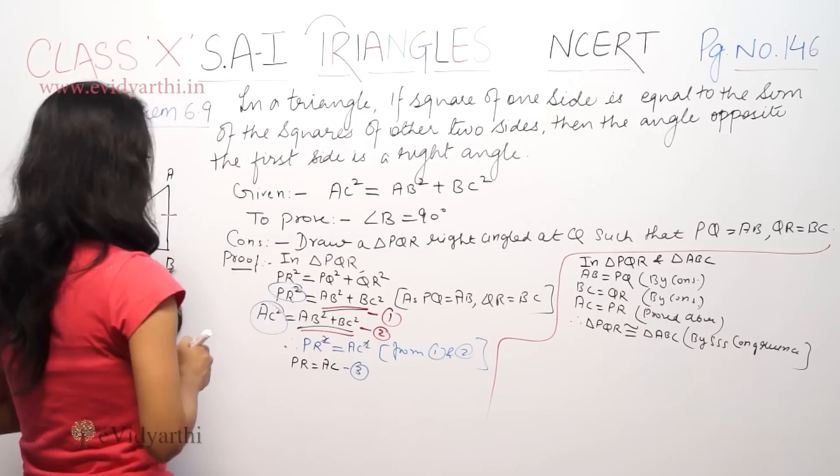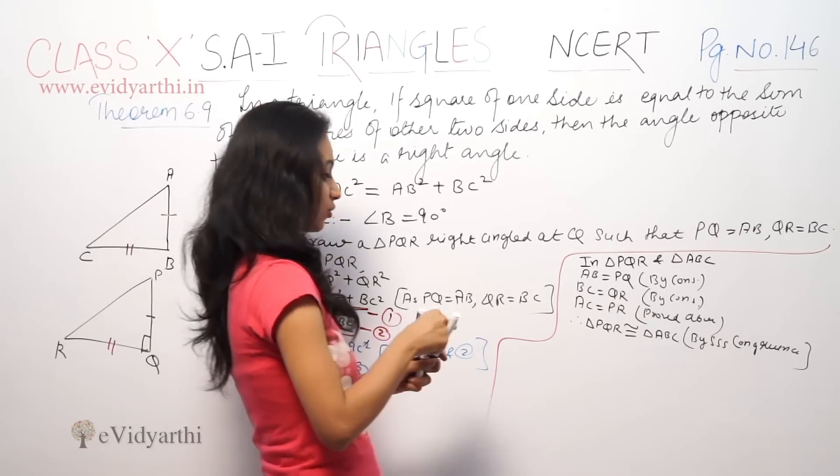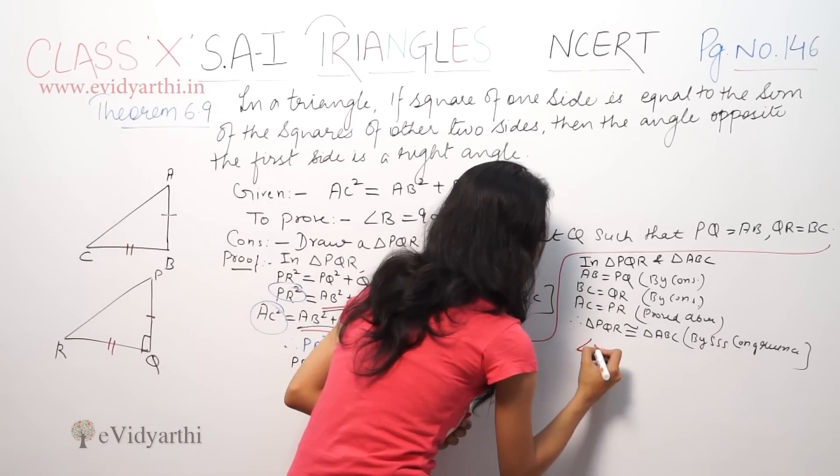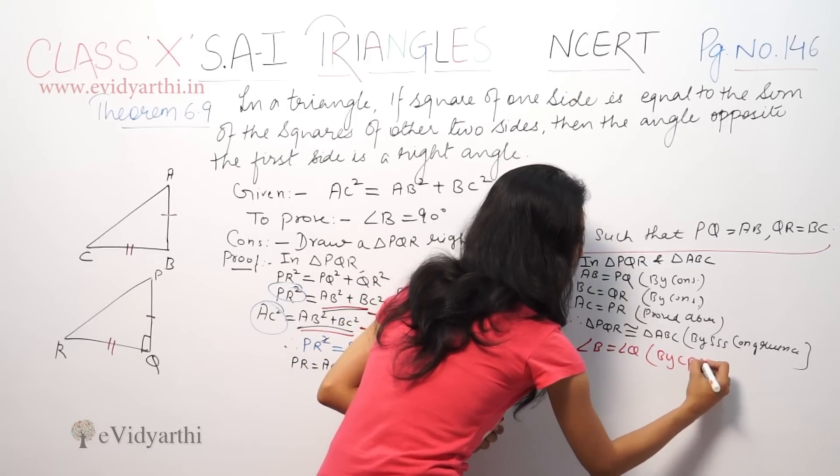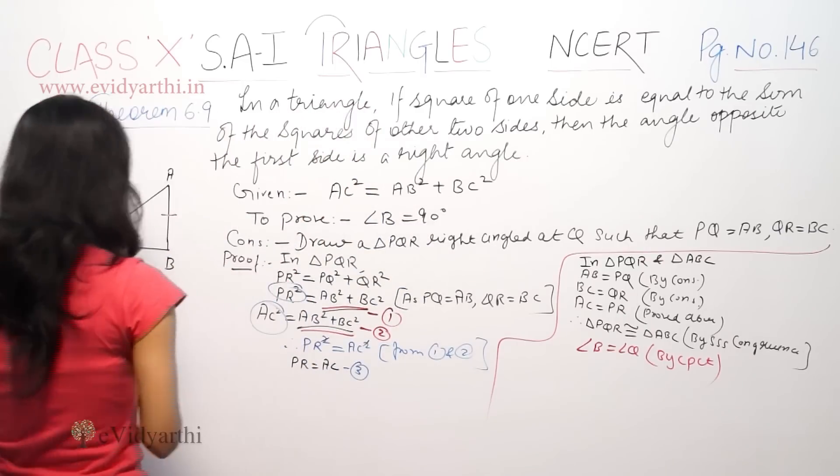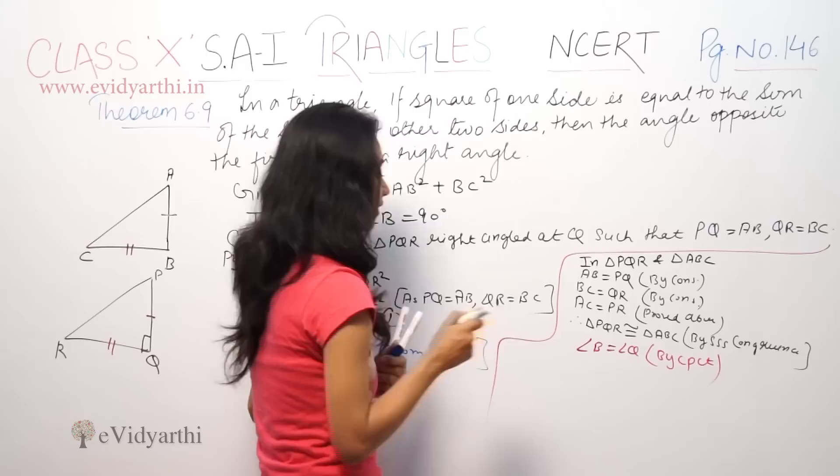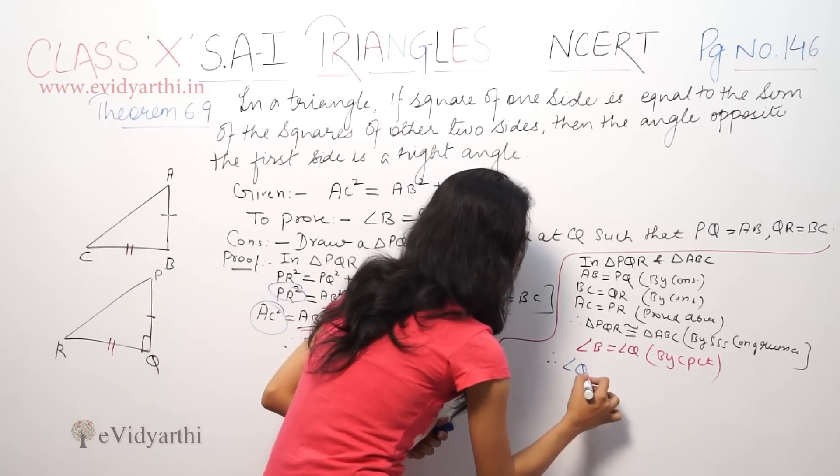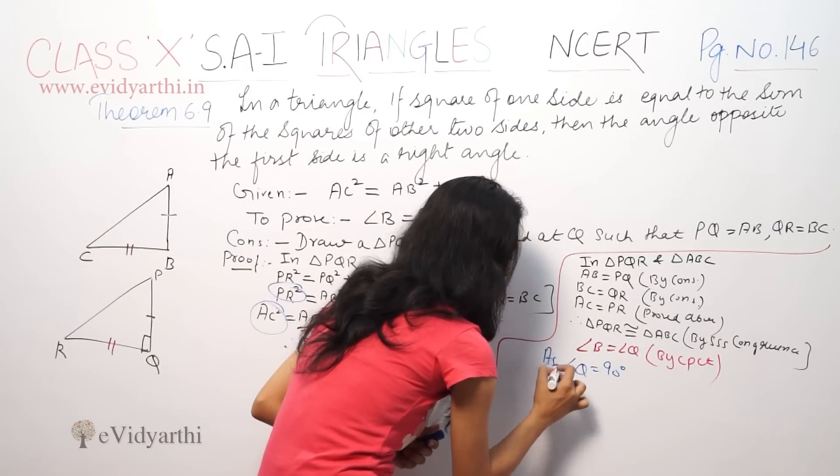Now, since the triangles are congruent, we can say that angle B is equal to angle Q by CPCT. Since angle Q is 90 degrees, therefore angle B is 90 degrees.